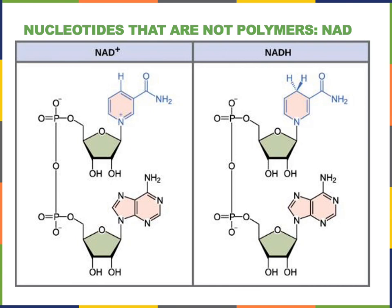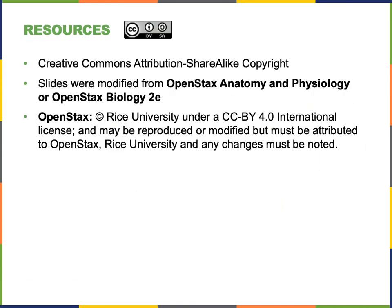Another example of a nucleotide that doesn't form nucleic acids but has an important function in metabolism is NAD — nicotinamide adenine dinucleotide. As we study the mechanism of cellular respiration, we will see that NAD can accept electrons along with a hydrogen to become NADH, and then NADH can release those electrons and hydrogen ion as it is converted back to NAD+. The NAD and NADH molecules function as a way to transport high-energy electrons within a cell.